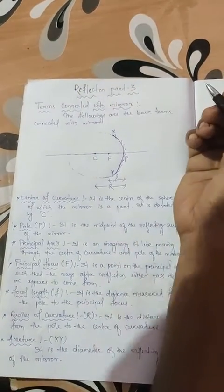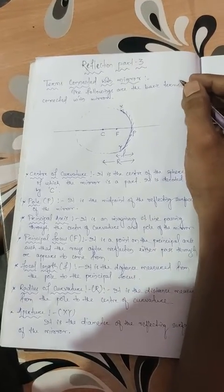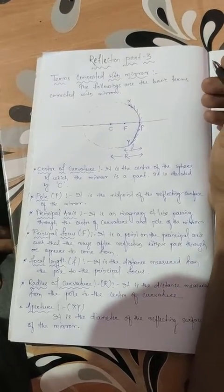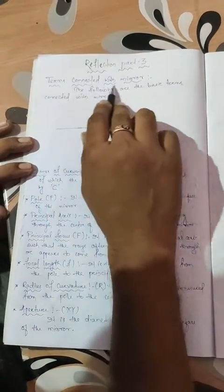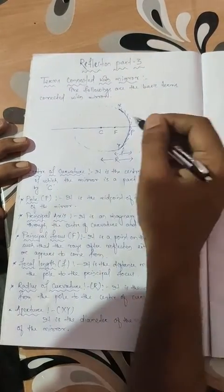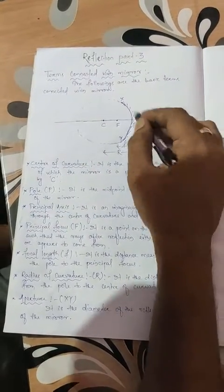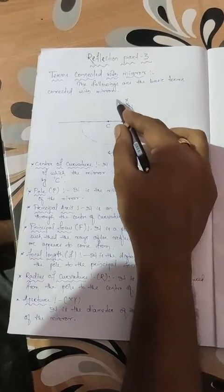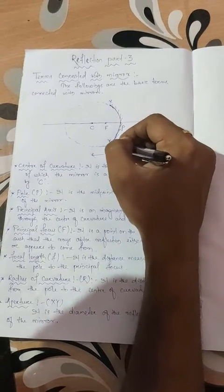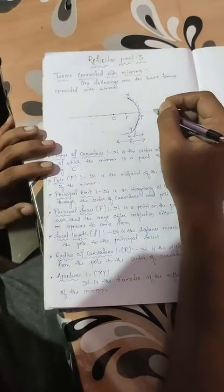Today we are going to learn about reflection part 3. In the previous video I taught you about what a mirror is, and now we are going to study some terms connected with mirror. Before going into those terms, we have to understand the diagram of the mirror. It is a sphere, where C is the center, and X and Y represent the part of the mirror — which is a concave mirror.